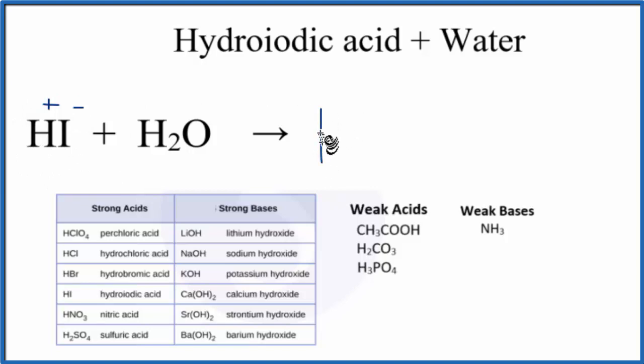We'll end up with H plus plus I minus. And because hydroiodic acid is a strong acid, this breaks apart completely. In water, these are going to be dissolved in the water. They're going to be dissociated. I'm going to say they're aqueous. So we put a little AQ to show that they're dissolved in water.